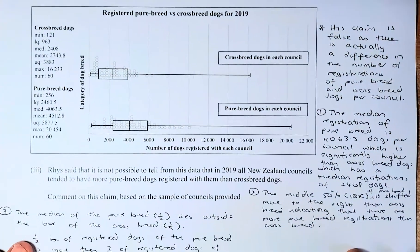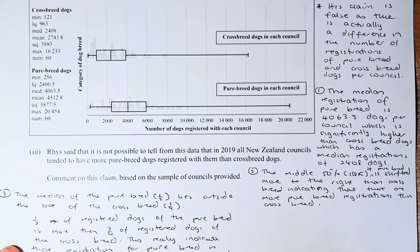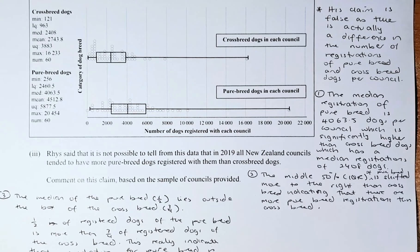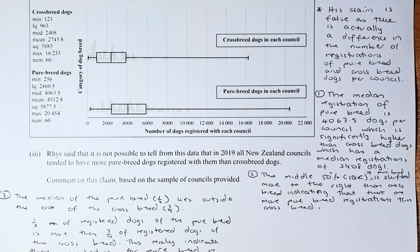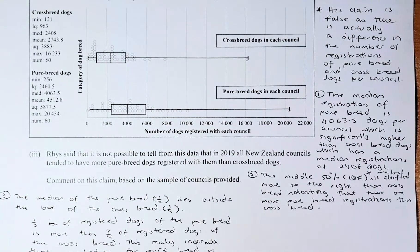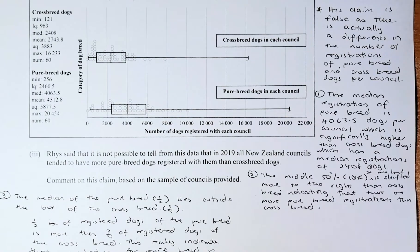We are going to do part 3. Part 3 of this paper is an excellence question. The question states: it is not possible to tell from the data that in 2019, all New Zealand councils tended to have more purebred dogs registered with them than crossbred dogs. His claim is false, because you can say that purebred dog registration is a lot more than the crossbred dogs. So how do we know this? We will look at some evidence.